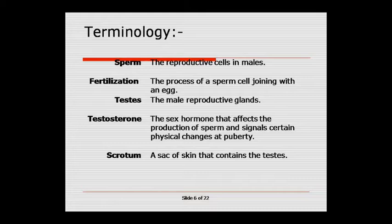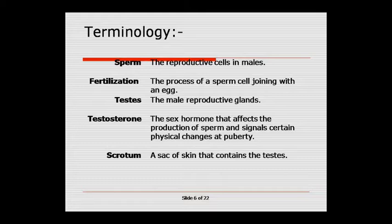Testes primary male reproductive gland या organ होती है। Testosterone यह sex hormone है जो कि sperm को produce करता है और puberty के दौरान certain physical changes को signal देता है। जैसे body hairs की growth, voice का भारीपन, aggressiveness, bones का develop होना, और muscular part का develop होना — यह सब testosterone से होता है।